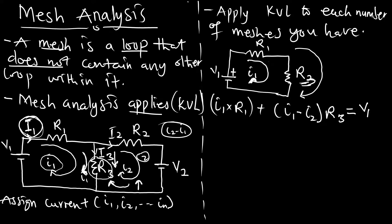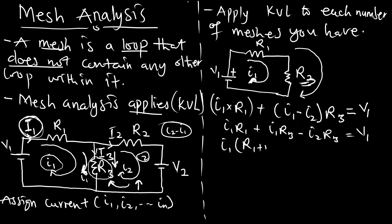Expanding the KVL equation: i1·R1 plus (i1 minus i2)·R3 equals V1. This gives us i1·R1 plus i1·R3 minus i2·R3 equals V1, which simplifies to i1(R1 + R3) minus i2·R3 equals V1. This is our first equation.